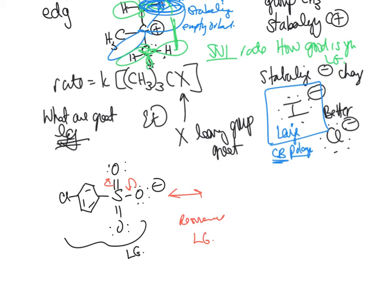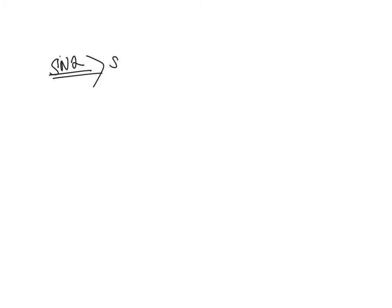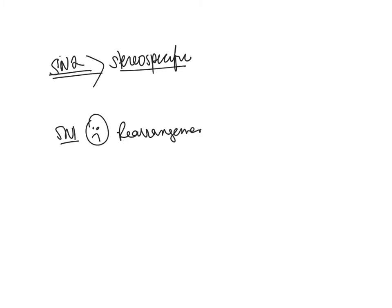Let me talk about rearrangements. SN2 is stereospecific and does nucleophilic backside attack — very useful. The problem with SN1 is you get rearrangements. When you're trying to make molecules you don't want rearrangements. You've got to look for this when you're doing SN1.